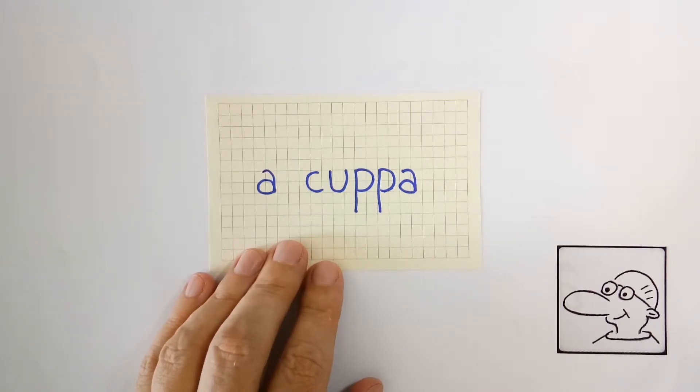They put on the kettle, boil some hot water, and make a cup of tea. Now in England, a cup of tea is drunk on many occasions.